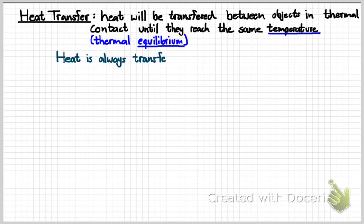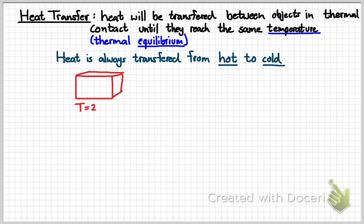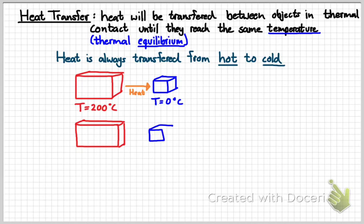So, heat's always transferred from a hot object to a cold object. So, to kind of draw a simple picture, I suppose you have two objects, one which is at 200 degrees Celsius, the other which is at 0 degrees Celsius. Heat's going to flow from the hot object to the cold object until they reach the same temperature, which may be 140 degrees Celsius.